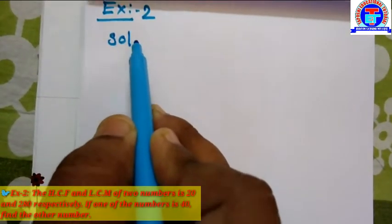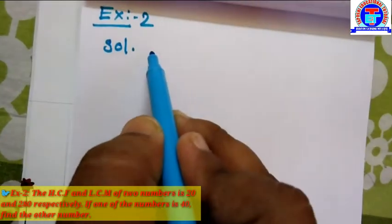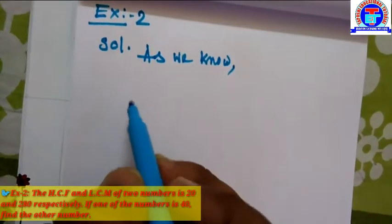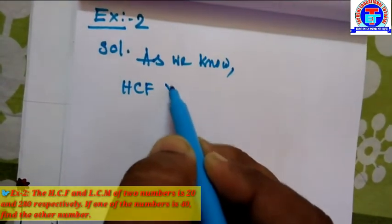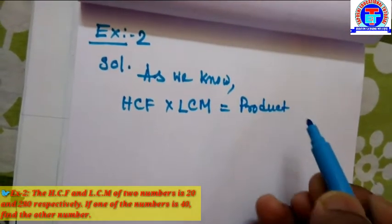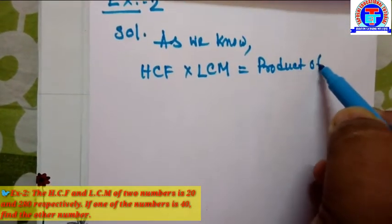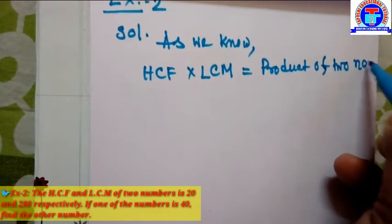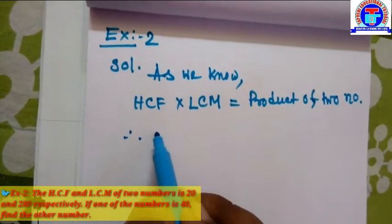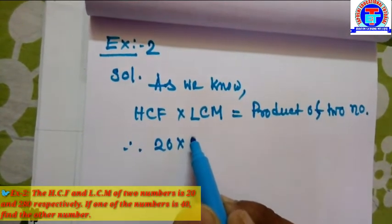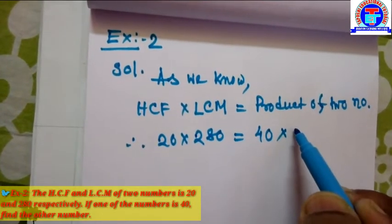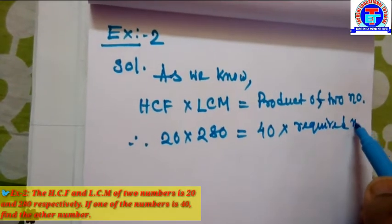Solution: as we know, HCF into LCM is equal to the product of two numbers. Using this formula, 20 into 280 is equal to 40 into the required number.